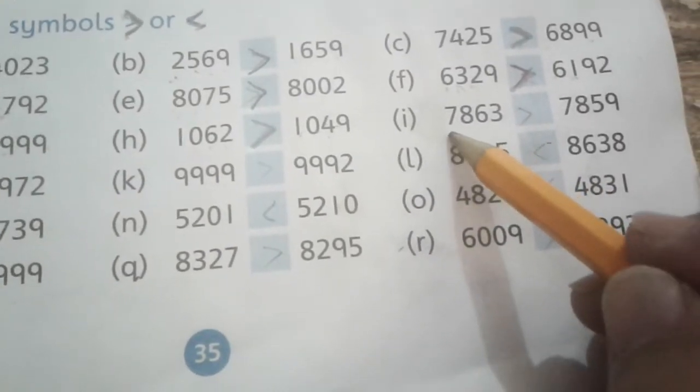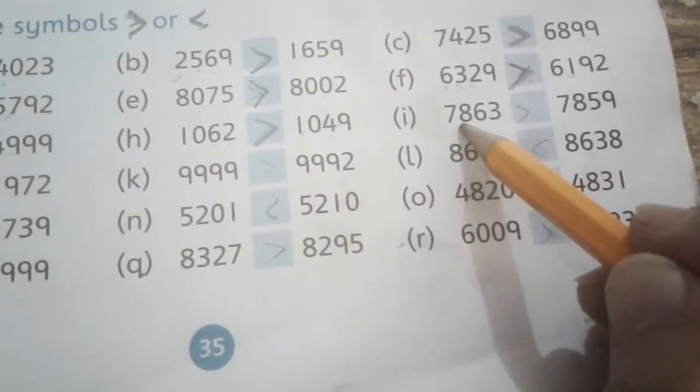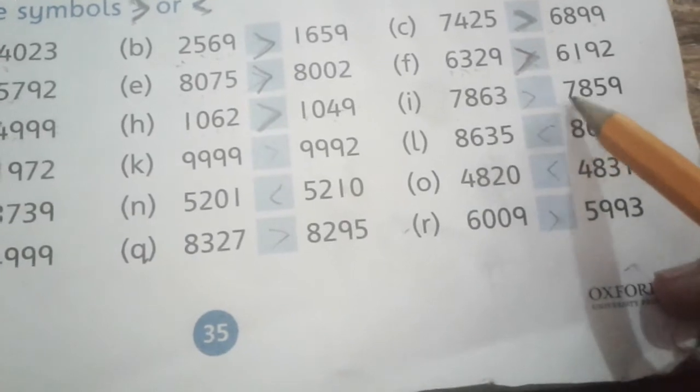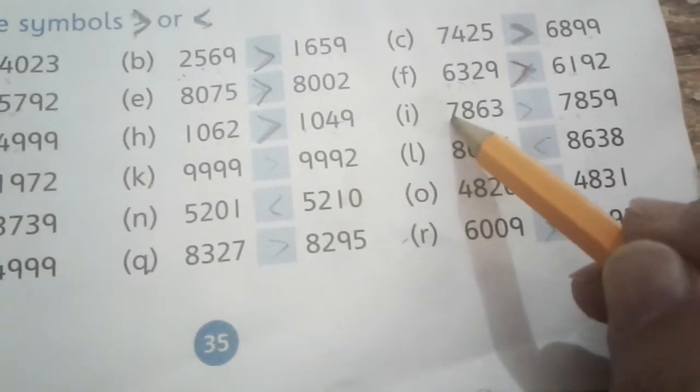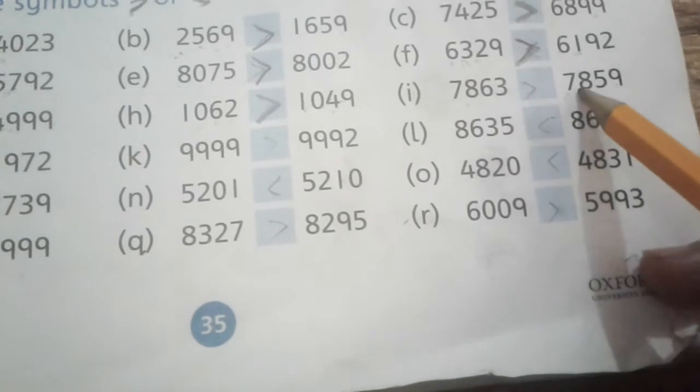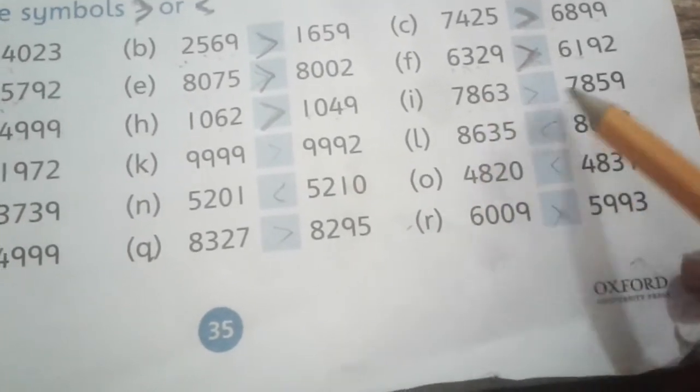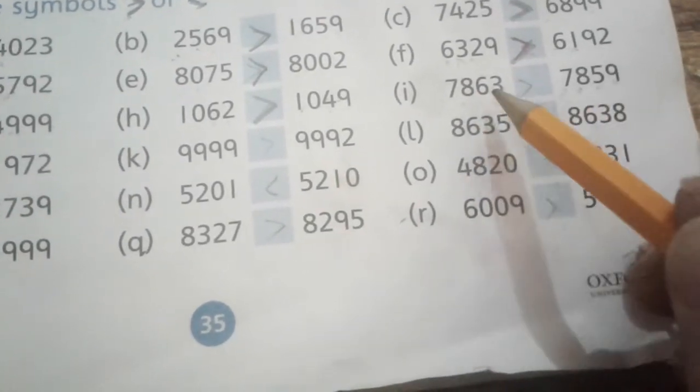Next is 7865 versus 7859. 7000 - 7000, same. 800 - 800, same. 63 versus 59. 63 is bigger than 59.